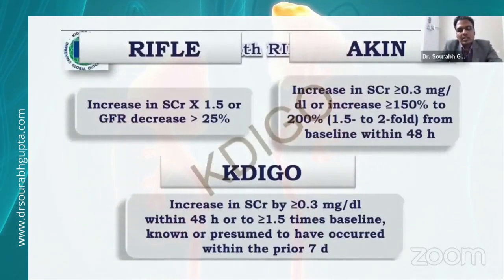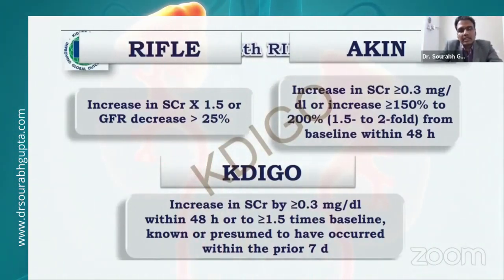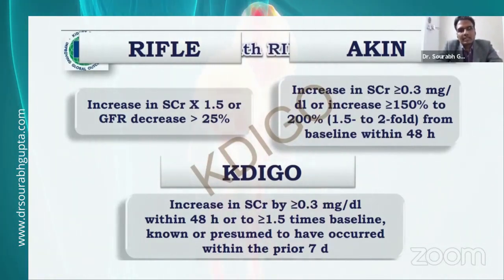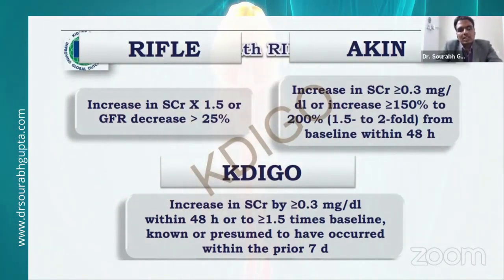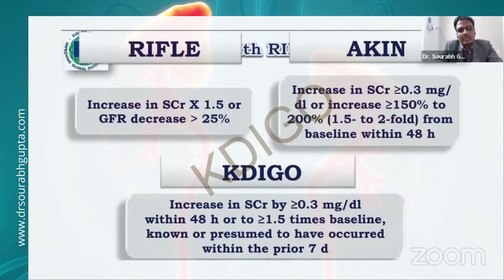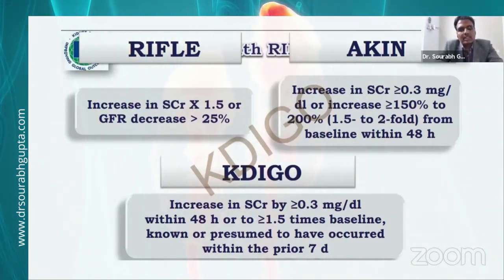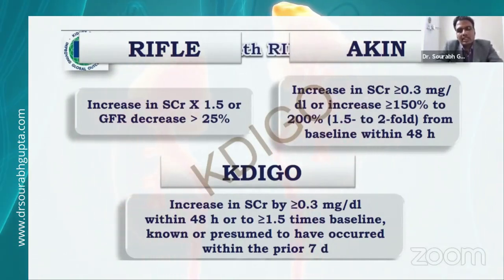Gradually multiple definitions came around. Initially there were around 35 definitions. The major early ones were RIFLE in adults and pRIFLE in pediatrics. Then came the KDIGO classification. Currently, the most followed classification for both pediatric and adult is the KDIGO classification. Though pRIFLE criteria might have better sensitivity, for generalization KDIGO classification is preferred.